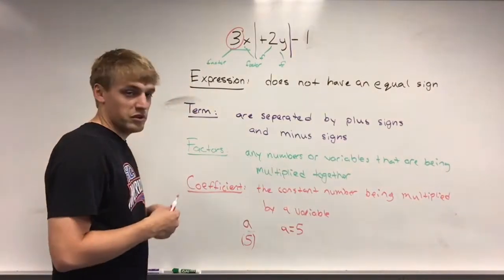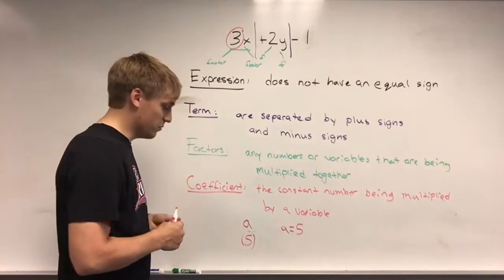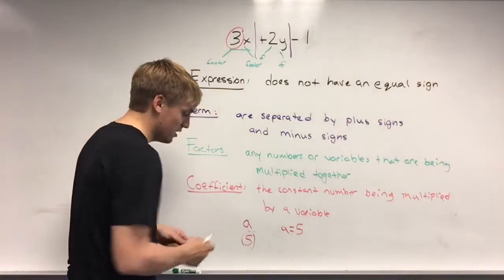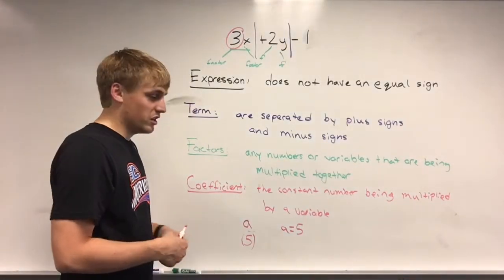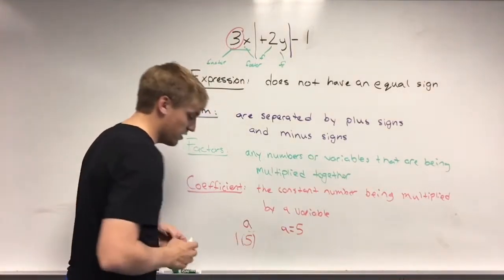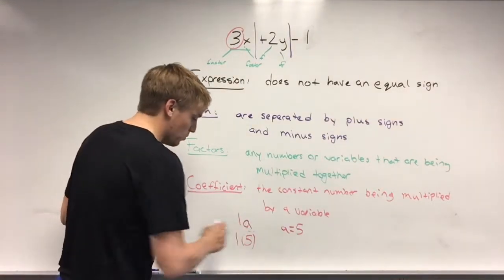Well, a should always be 5. So, if we were to multiply something because we put it in parentheses, what times 5 would still give us 5? Well, 1 times 5 would still give us 5. So, that's why it's 1a.